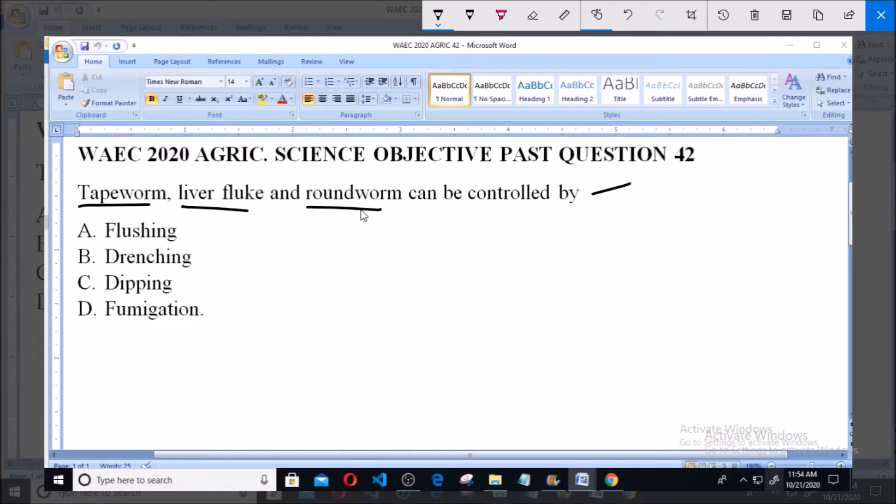Now mind you, these three, the aforementioned organisms, that is Tapeworm, liver fluke and roundworm are classified as endoparasites. That is, parasites that live inside the body of their host.